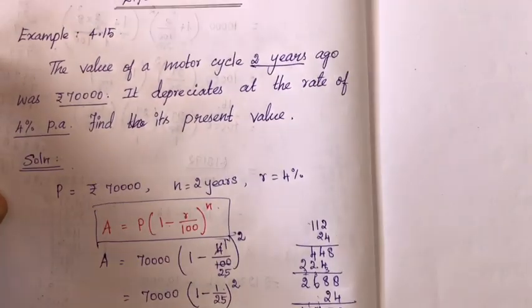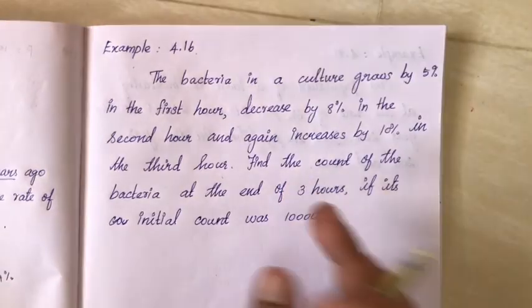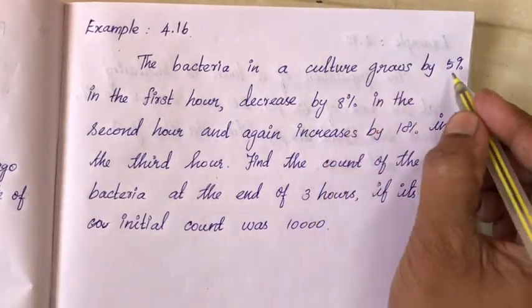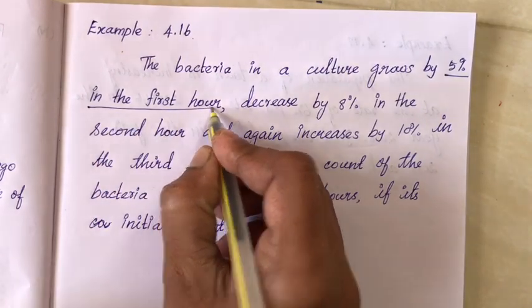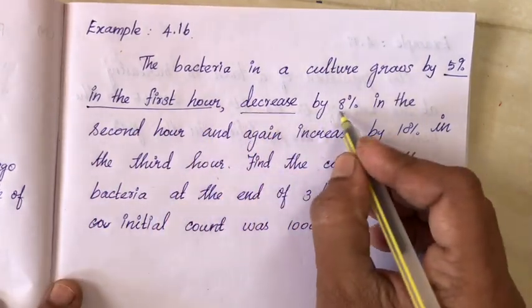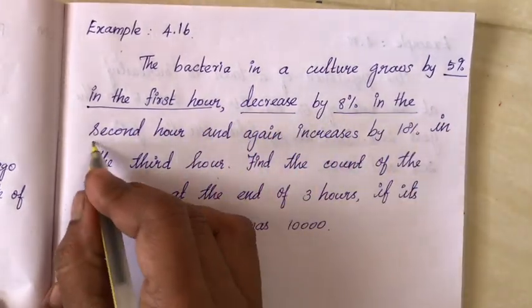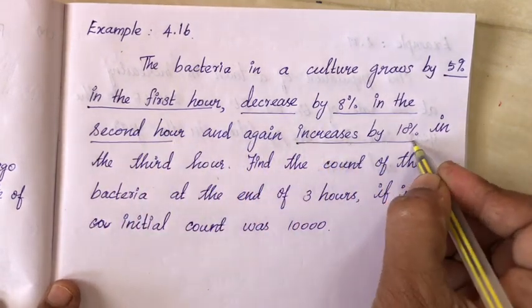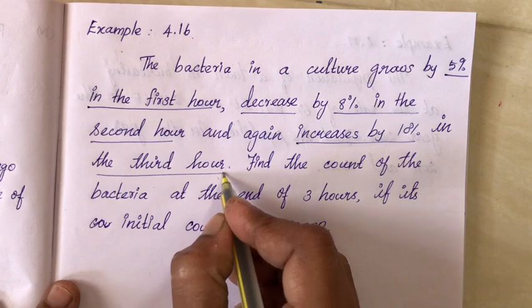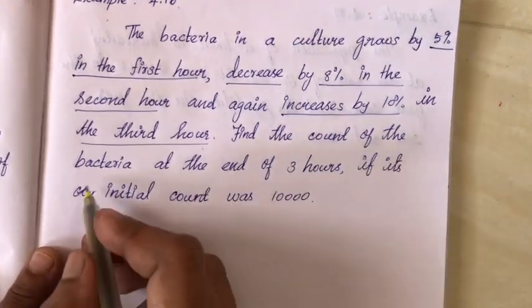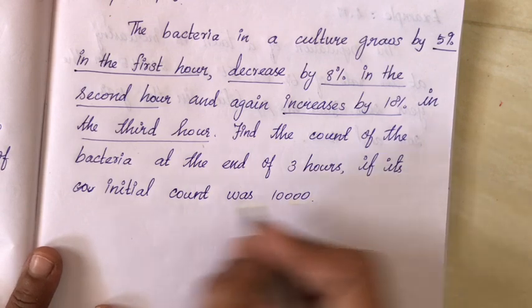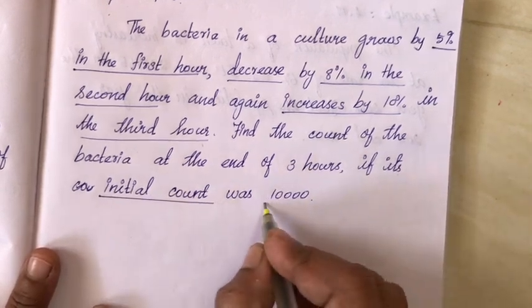Next, example 4.16. The bacteria in a culture grows by 5% in the first hour, decreases by 8% in the second hour, and again increases by 10% in the third hour. Find the count of the bacteria at the end of 3 hours if its initial count was 10,000.